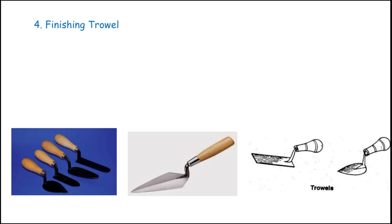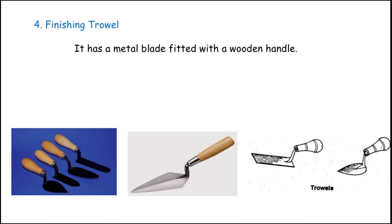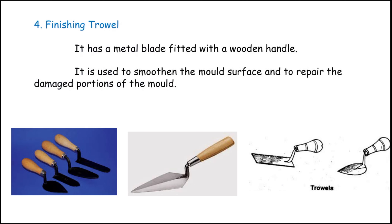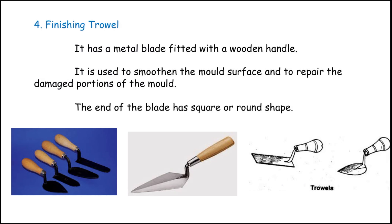The next one is the finishing trowel. It has a metal blade fitted with a wooden handle. It is used to smoothen the mold surface and to repair the damaged portions of the mold. The end of the blade has square or round shapes to give proper repair work.